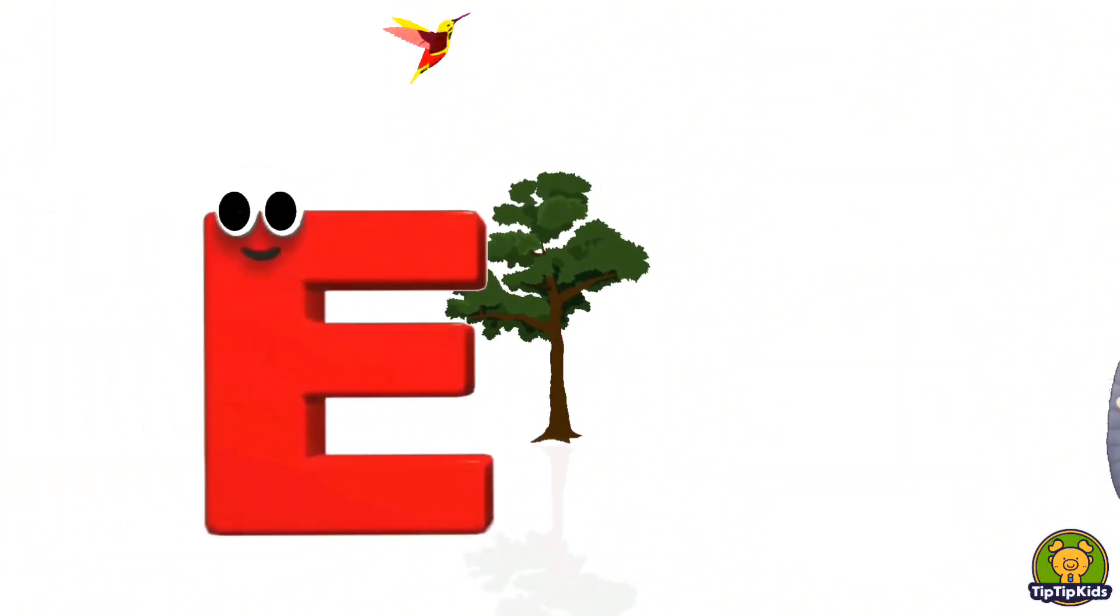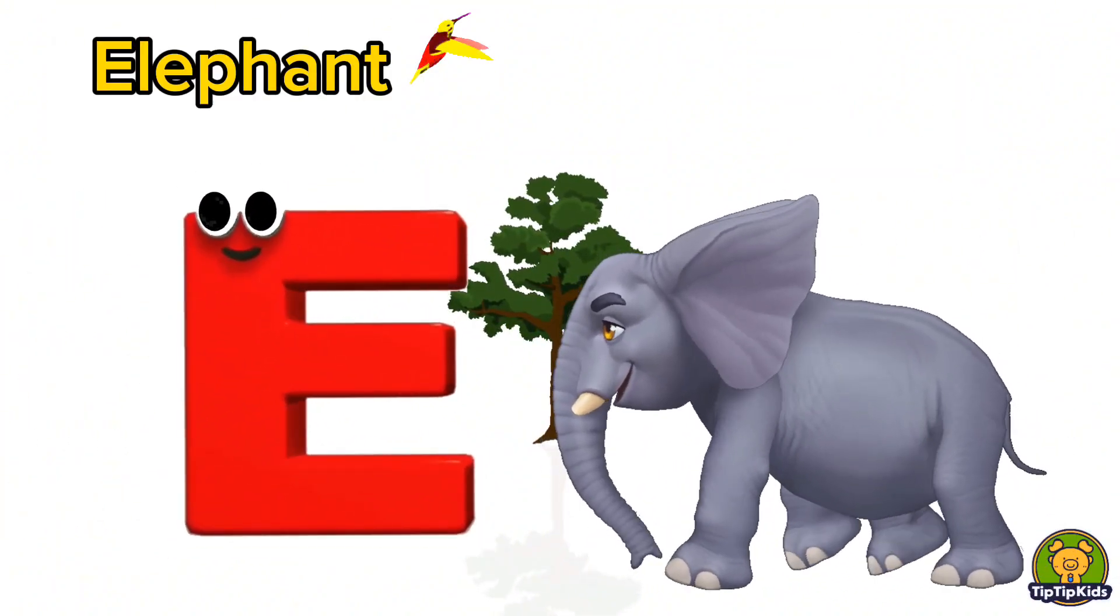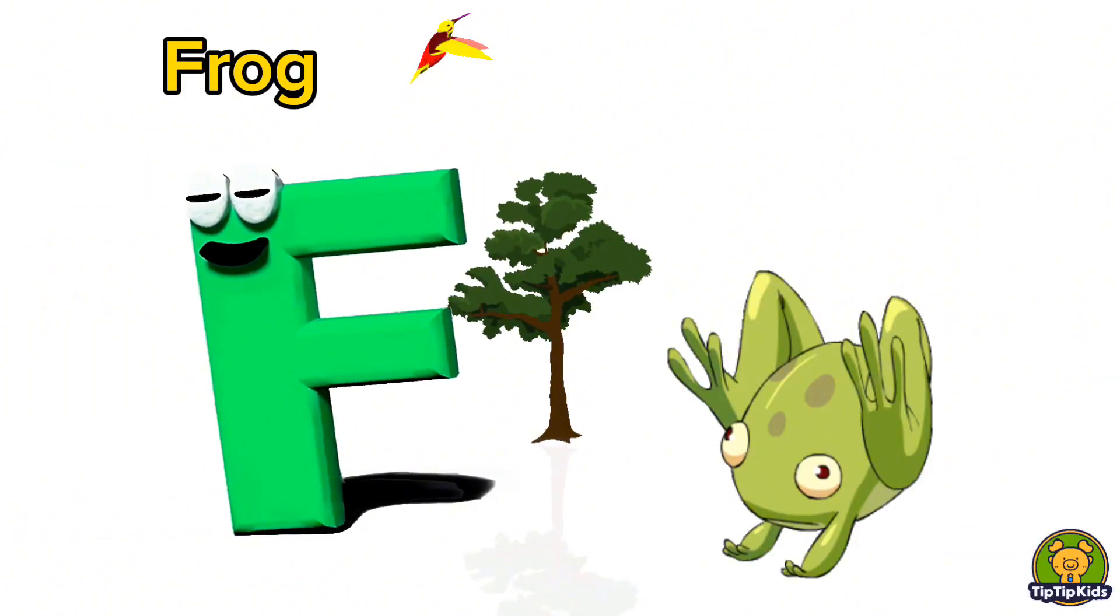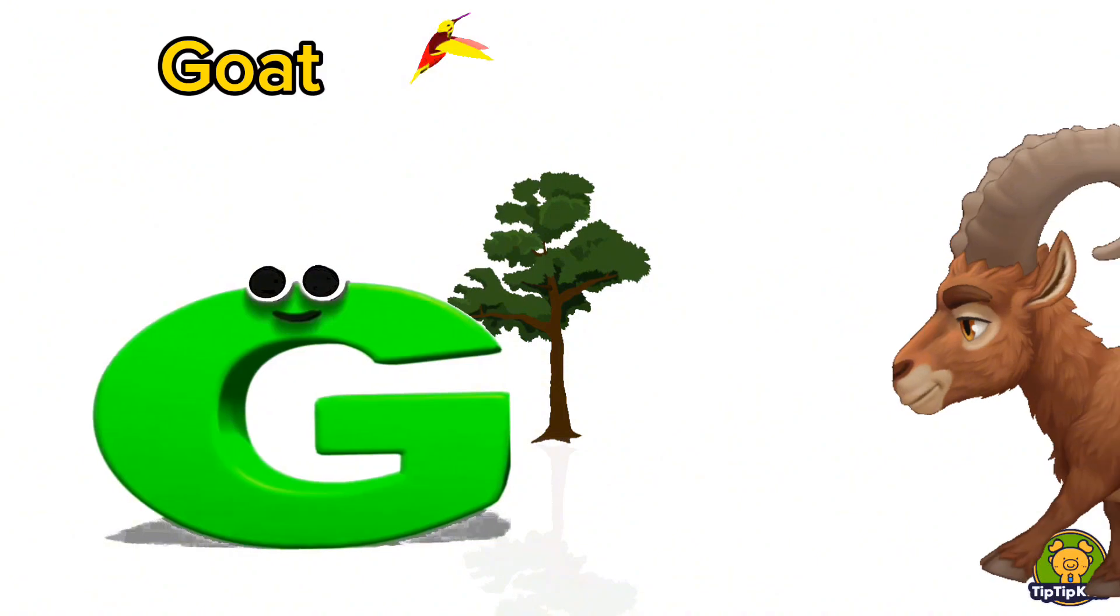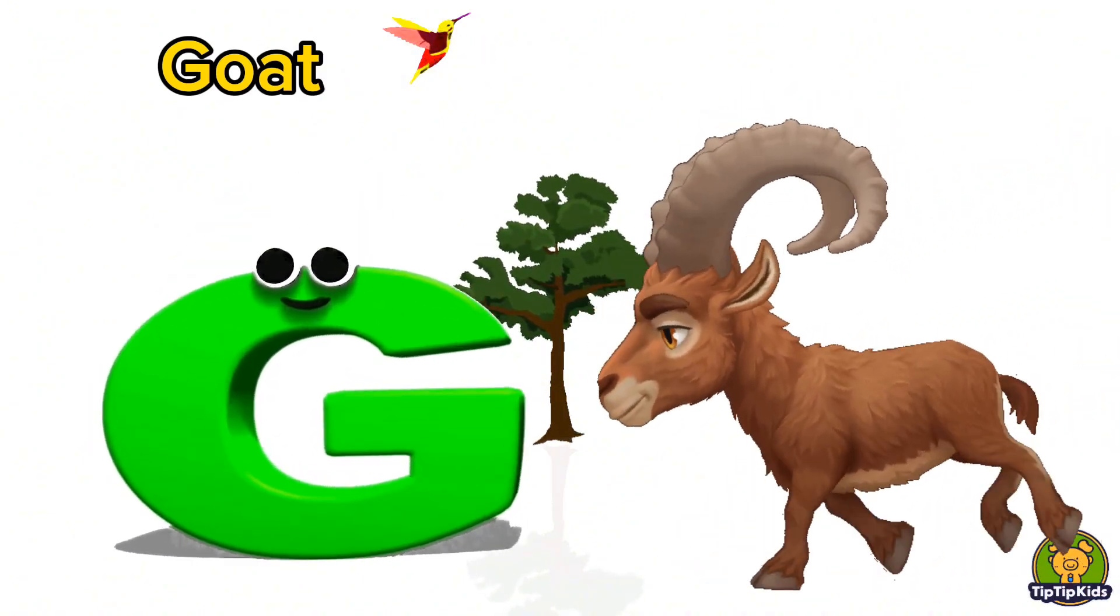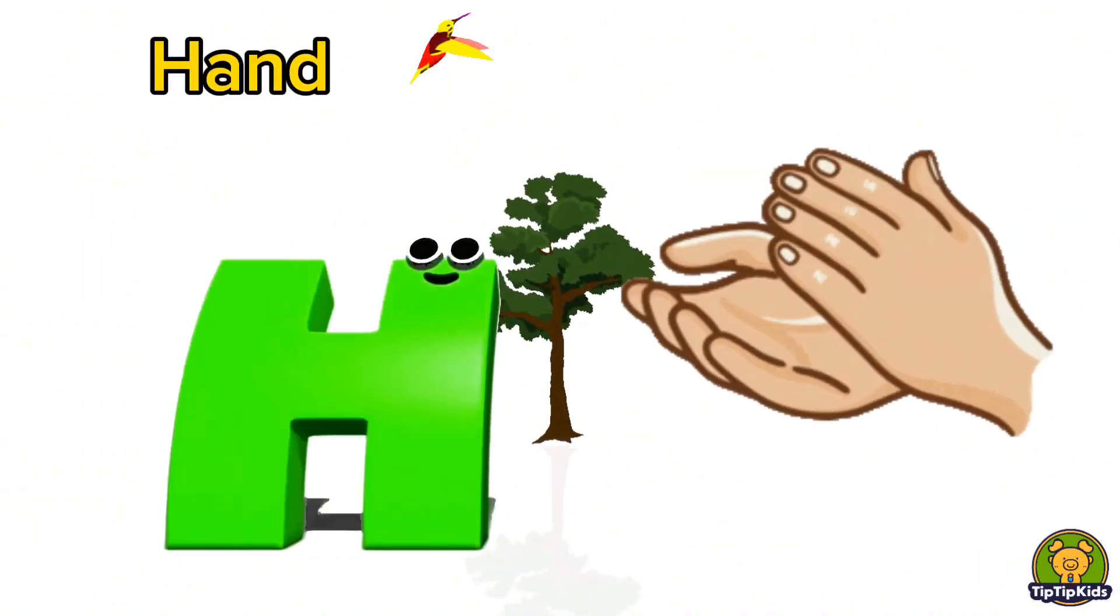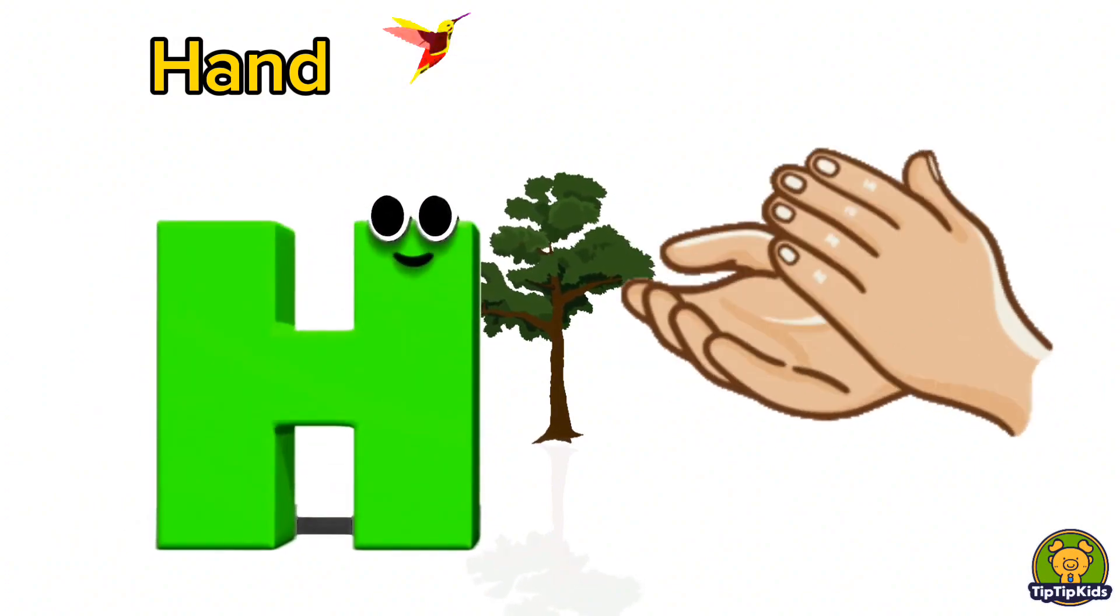E is for Elephant, E-E-Elephant. F is for Frog, F-F-Frog. G is for Goat, G-G-Goat. H is for Hand, H-H-Hand.